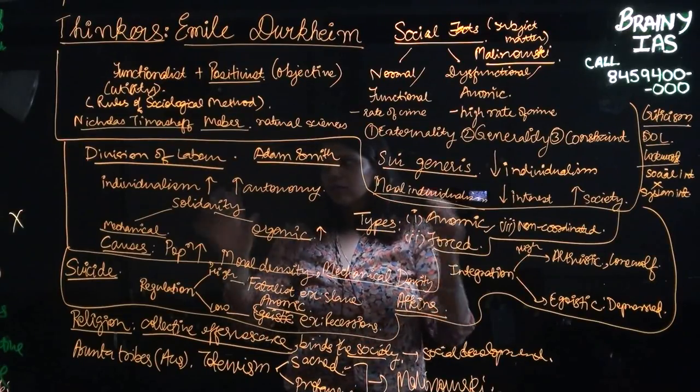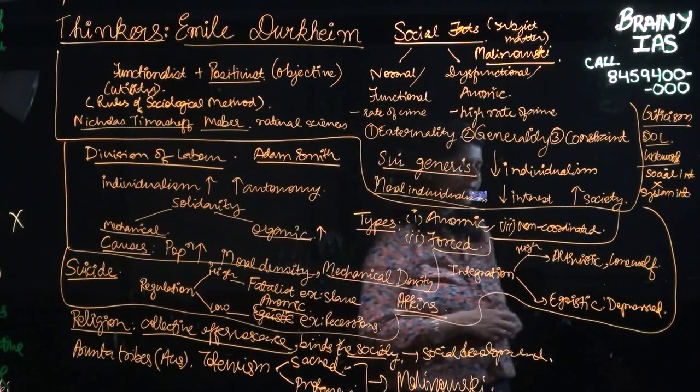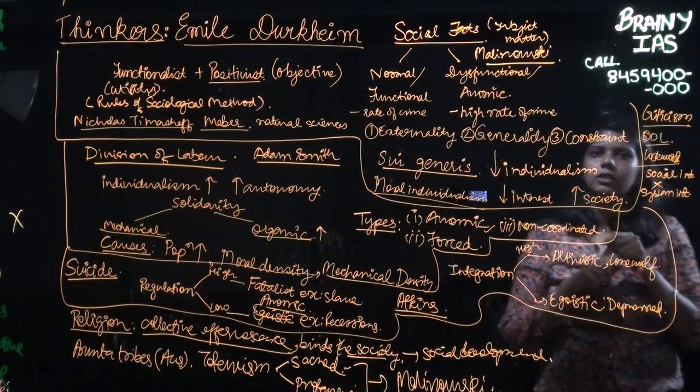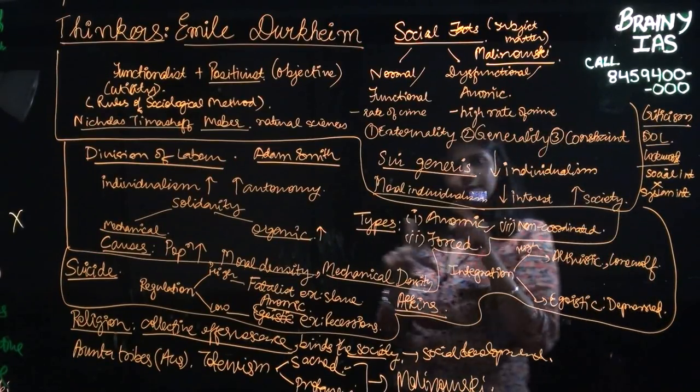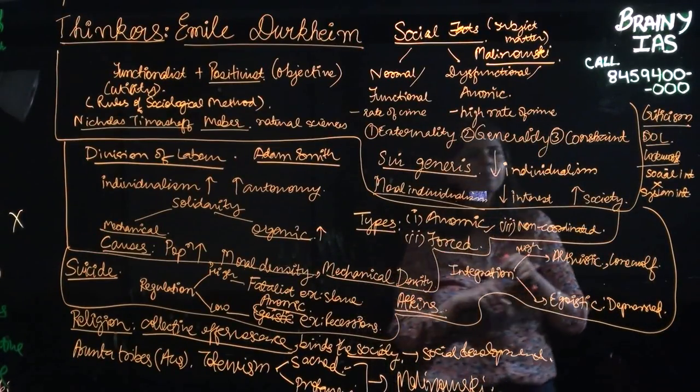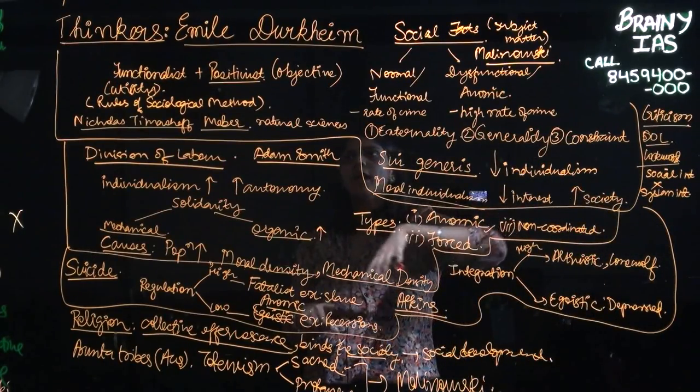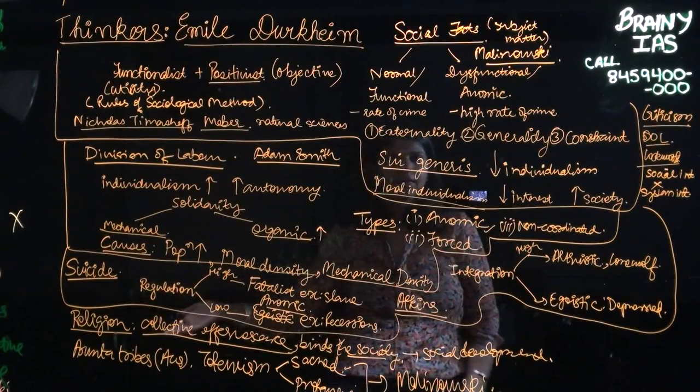So those were largely the four topics that UPSC mandates us when reading Durkheim. To begin with, there has to be social facts, which Durkheim believes is the subject matter of sociology. He lays down three conditions, how a fact can become a social fact, and then he talks about division of labor in his work under the same name.